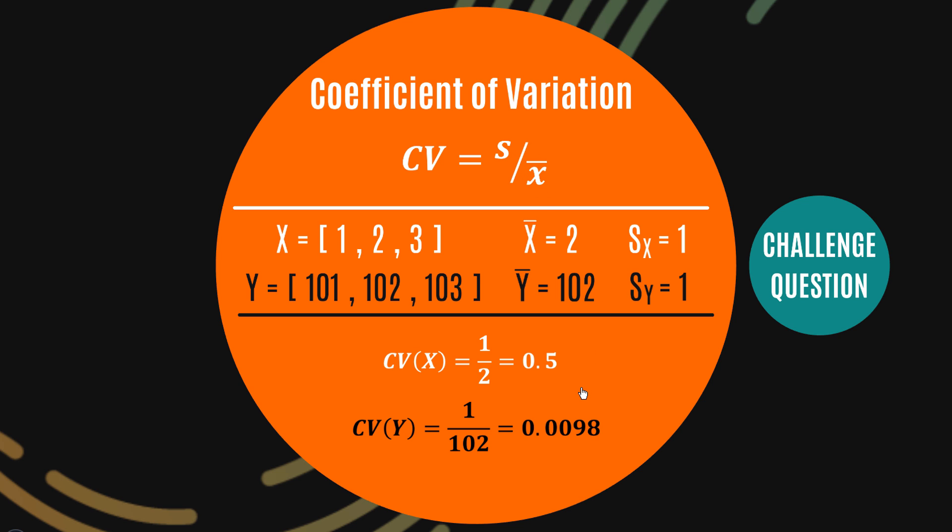So it does show you something different than the standard deviation itself, right? The standard deviation is in absolute terms, whereas the coefficient of variation is in proportionate terms, proportionate to what the sample mean.